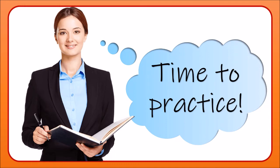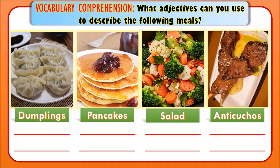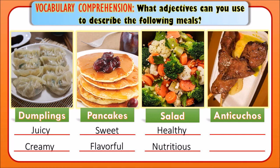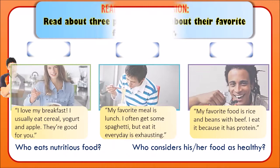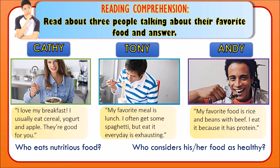In this part you have four pictures of typical meals: dumplings, pancakes, salad, and anticuchos. What adjectives from the set we studied can we use to describe each one? Dumplings are juicy and creamy. Pancakes are sweet and flavorful. Salad is nutritious and healthy. And finally, anticuchos — the first adjective is juicy and greasy.